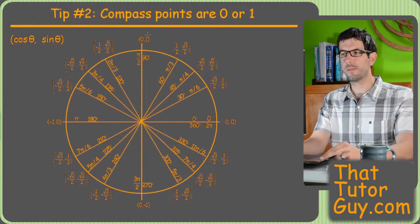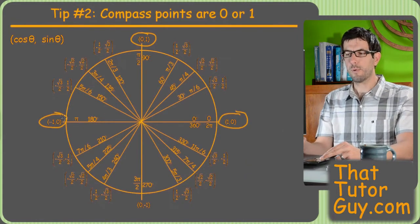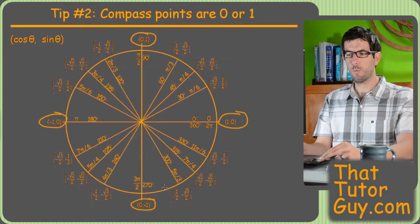This one's super self-explanatory. I've never really met a student who had trouble, much trouble with the compass points compared to other angles, but there you go, zero and one.